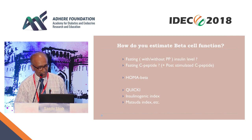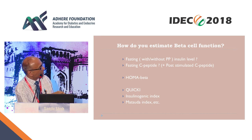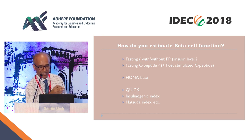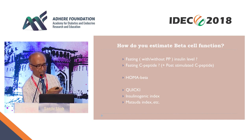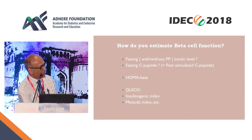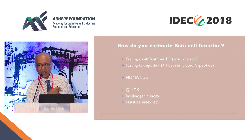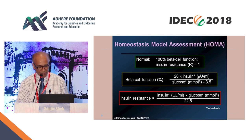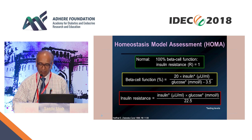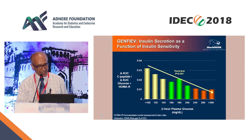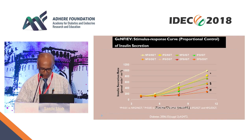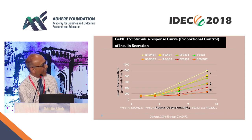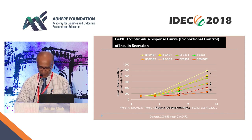Estimating beta cell function is quite difficult. Fasting insulin or prandial insulin does not have much value and is not part of standard of care. Fasting C-peptide and stimulated C-peptide are slightly more useful and are done to rule out type 1 diabetes. HOMA-beta is frequently quoted in studies using fasting plasma glucose and insulin. There are also more sophisticated indices done with oral GTT. Simple formulas are available to calculate HOMA-IR, HOMA-beta, or disposition index using glucose, insulin, and C-peptide, and these show that insulin secretion is progressively lower as a person moves from one stage to the next.